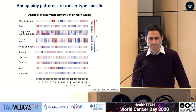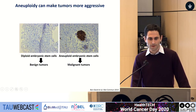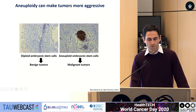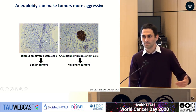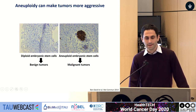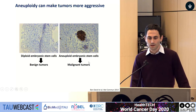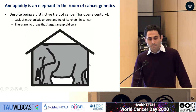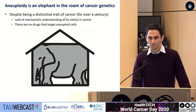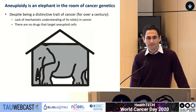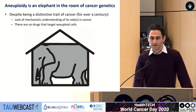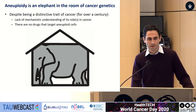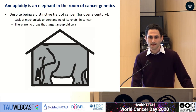We have evidence from several experimental systems that aneuploidy can indeed make tumors more aggressive. For example, in human embryonic stem cells — normal cells with two copies of each chromosome — if we transplant them to immune-deficient mice, we get benign tumors called teratomas. However, these cell lines sometimes acquire aneuploidy spontaneously in culture, and when that happens and we transplant them to mice, they can generate malignant tumors called teratocarcinomas. Despite knowing this for over a century, we still know relatively little about how aneuploidy promotes cancer formation and progression, and we currently have no drugs targeting this fundamental difference between cancer and normal cells.